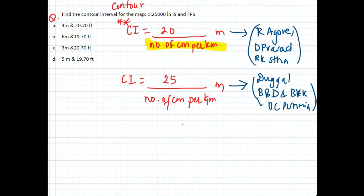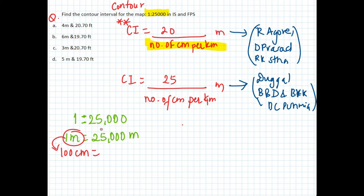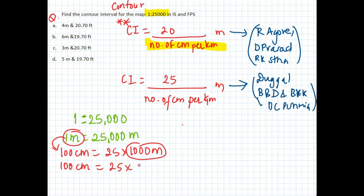To find the number of centimeters per kilometer, we use the scale 1:25,000. So one meter equals 25,000 meters. We know one meter is 100 centimeters, and 25,000 meters is 25 into 1,000 meters, which is 25 kilometers. So 100 centimeters equals 25 kilometers.